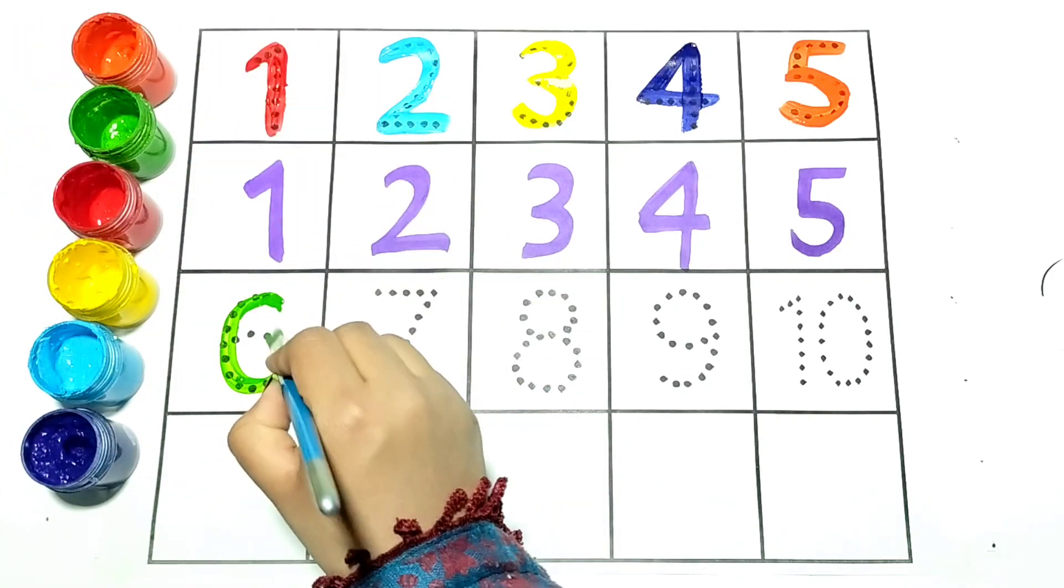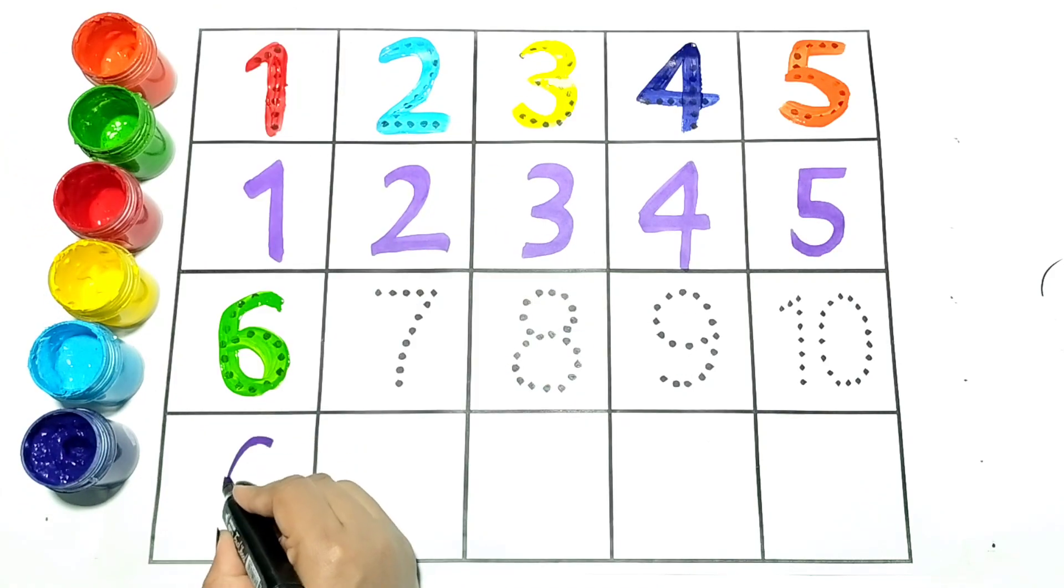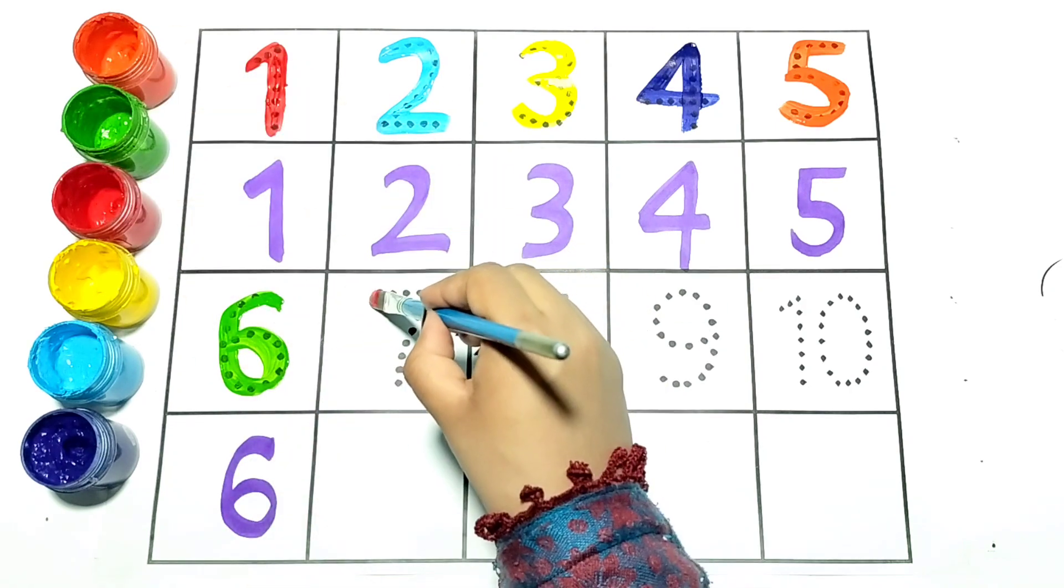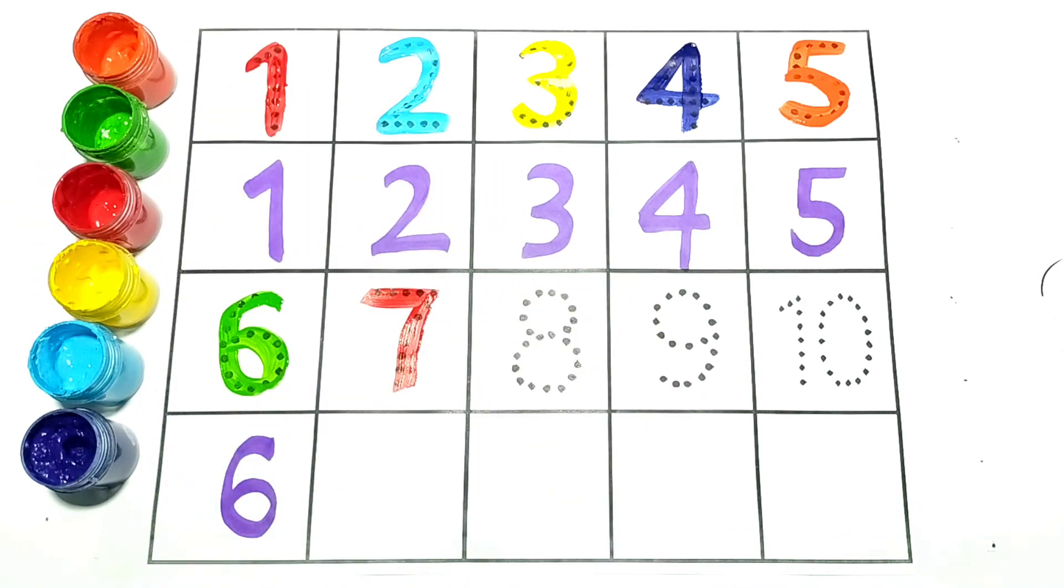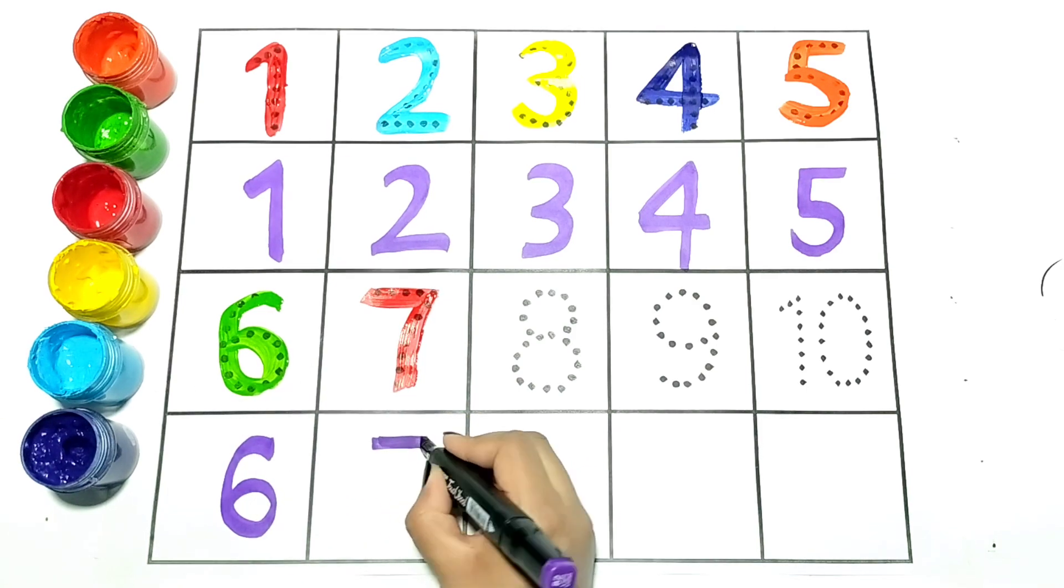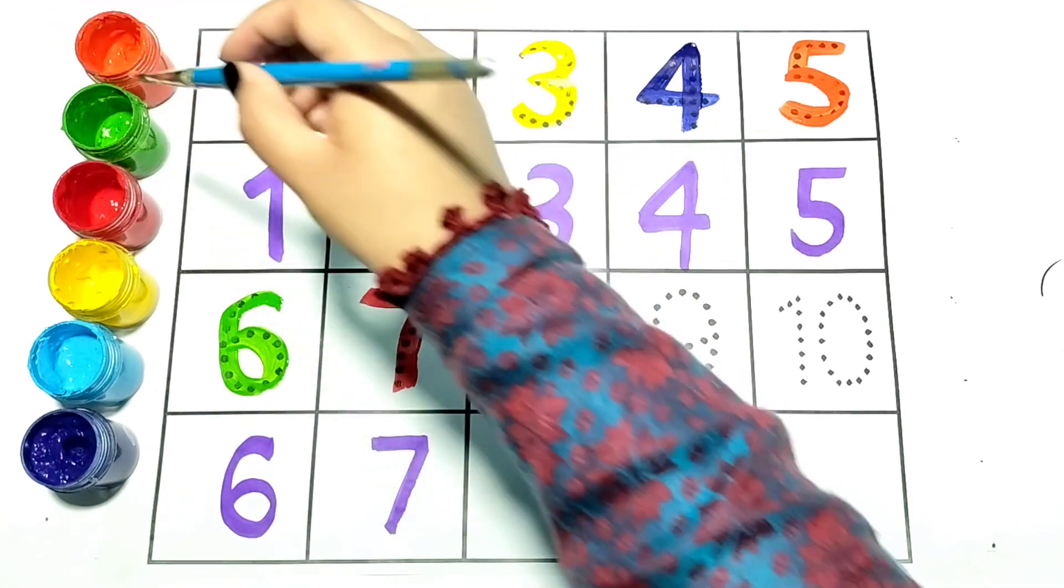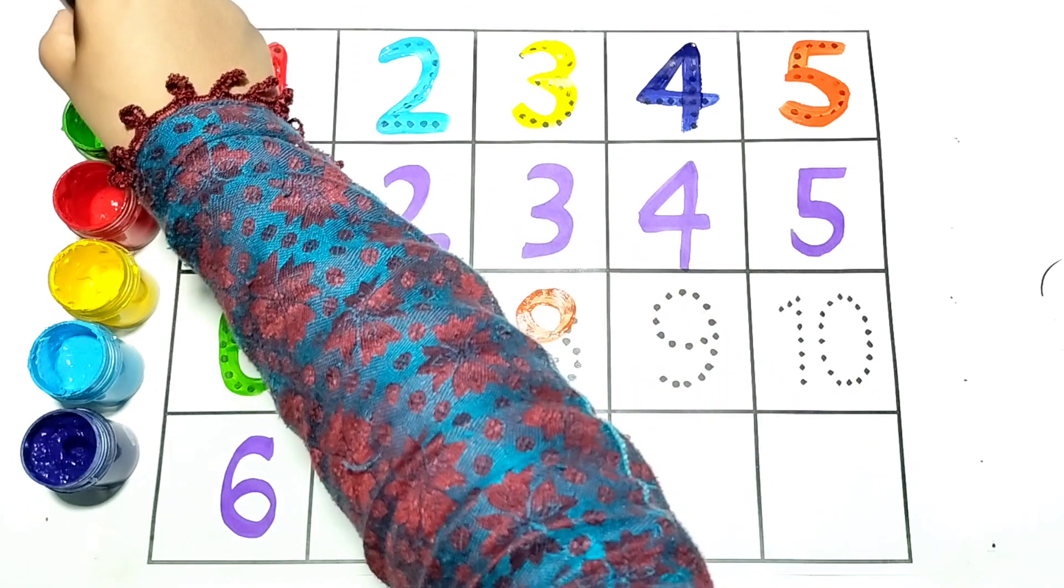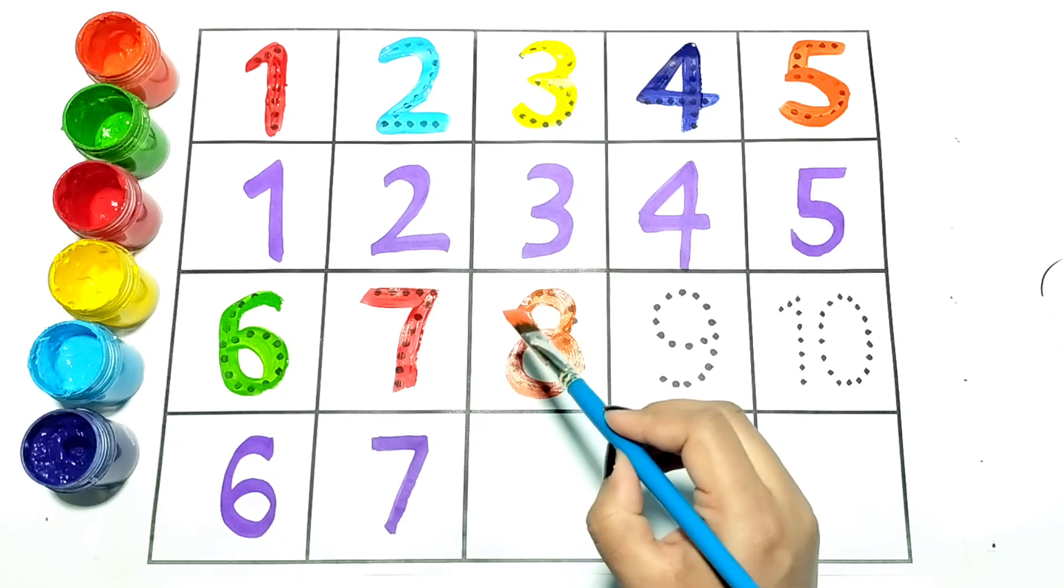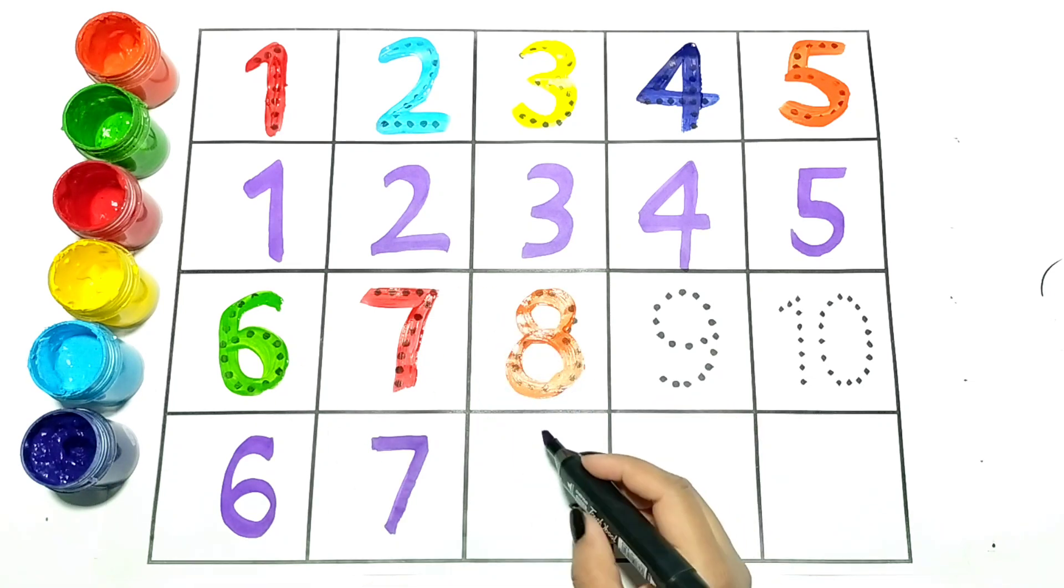Green, now I am writing six. Red Seven. Orange, let's write eight. Kids repeat with me.